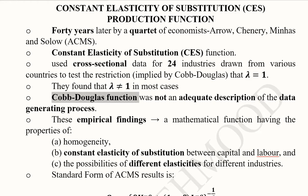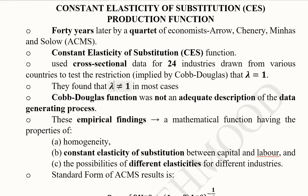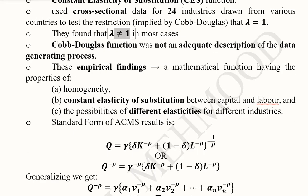This means constant returns to scale doesn't necessarily hold in every case. The Cobb-Douglas function was not an adequate description of the data generating process. A better production function was needed to consider cases where λ ≠ 1.